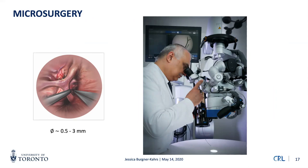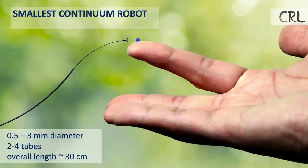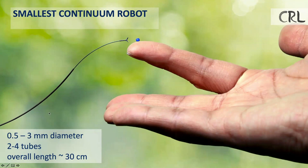We built a continuum robot to support neurosurgical procedures through the surgical microscope — providing a third hand for tasks like taking biopsies at precise locations or delivering drugs. The smallest continuum robot we can build — the smallest in the world — is shown on the title slide: a concentric tube continuum robot composed of two to four concentric telescoping tubes. This particular one is about 0.5 millimeters in diameter with a tiny medical forceps at the tip grasping a glass bead. The overall length is typically about 30 centimeters.